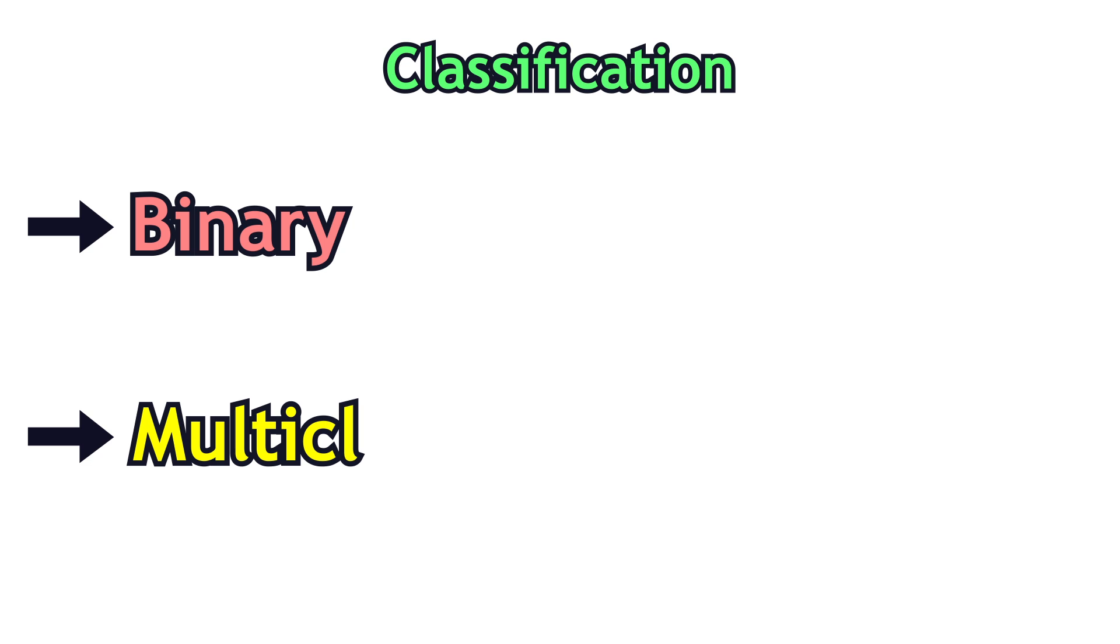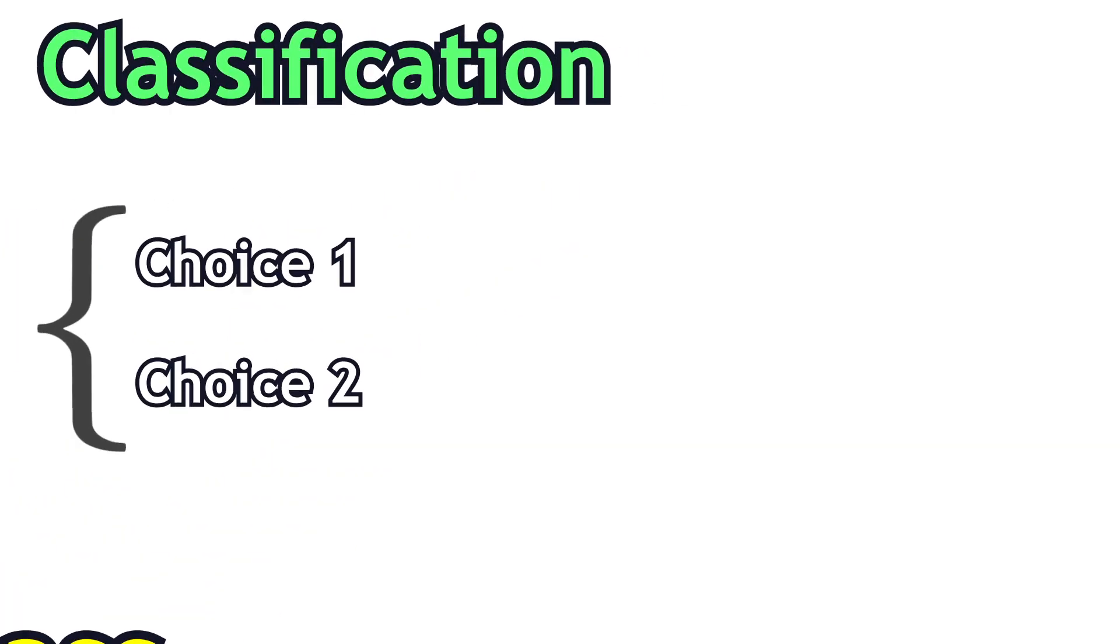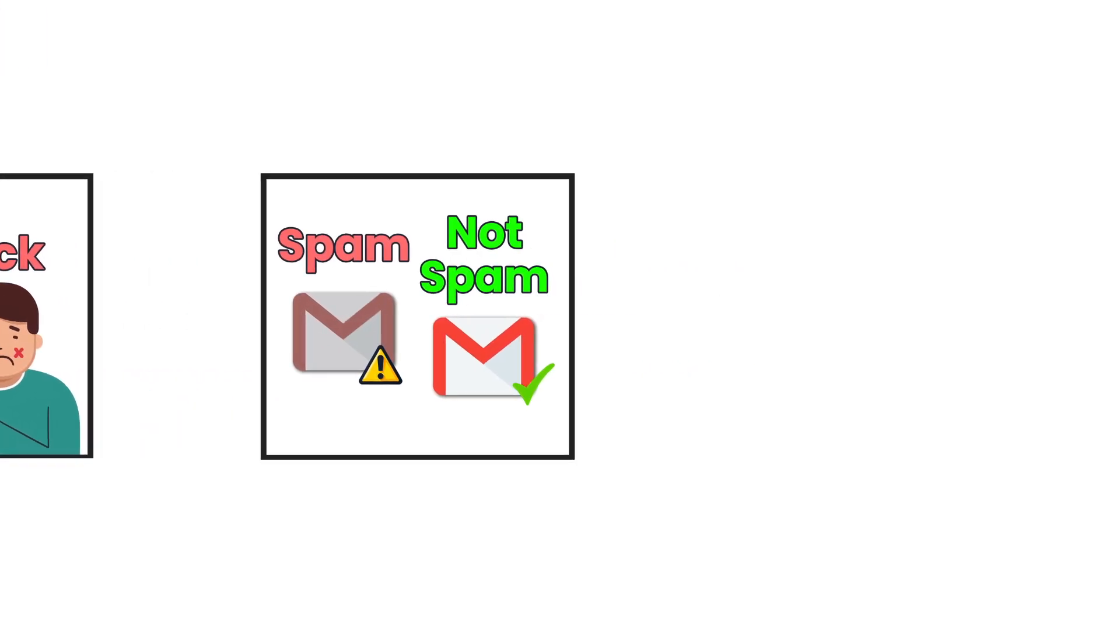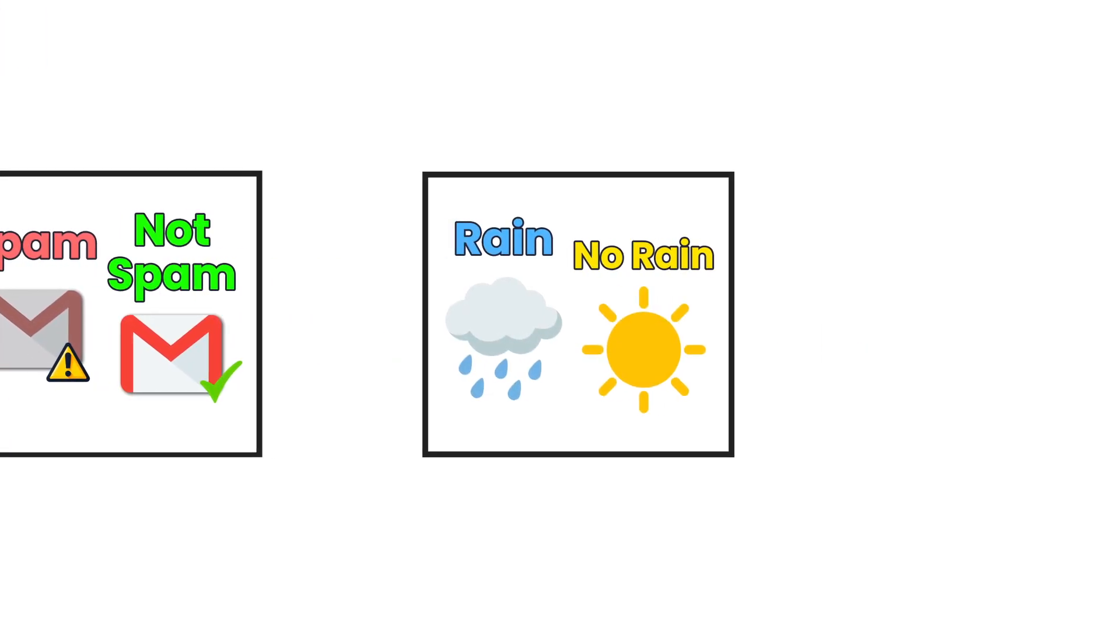Classification is divided into binary and multi-class classification tasks. In the case of binary classification, the aim is to decide between two choices. For example, predicting if the person has a disease or not, classifying spam or not spam emails, predicting rain or not rain for a day.